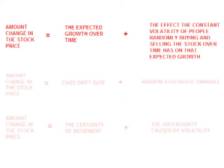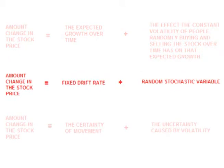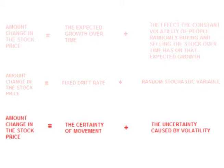I am going to show it again, worded a couple of different ways. They all basically mean the same thing, but it is important to try and understand each one. Change in stock price equals the expected growth over time, plus the effect the volatility of people randomly buying and selling the stock has on that expected growth. Change in stock price equals fixed drift rate plus a random stock variable. Change in stock price equals the certainty of movement plus the uncertainty caused by volatility.